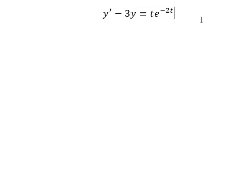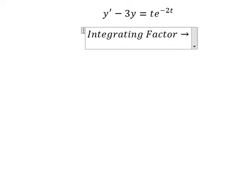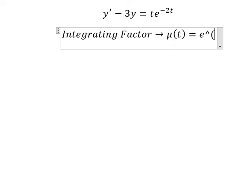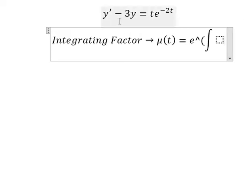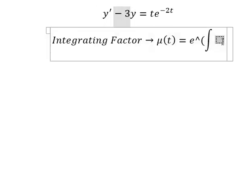We can use the integrating factor method. We need to find mu of t, which equals e to the power of the integral. We see the negative 3 next to y — that is for the integrating factor, so we put this here.